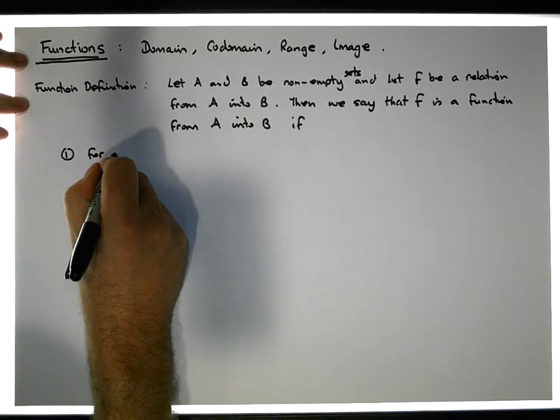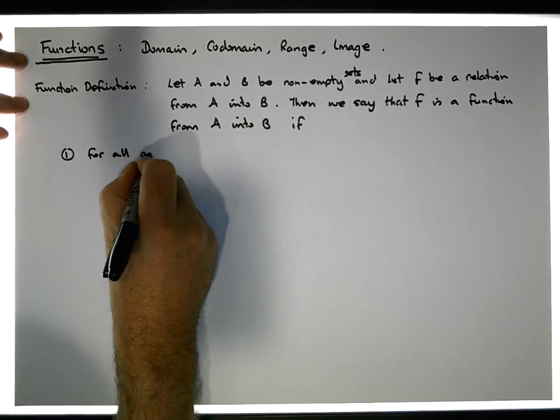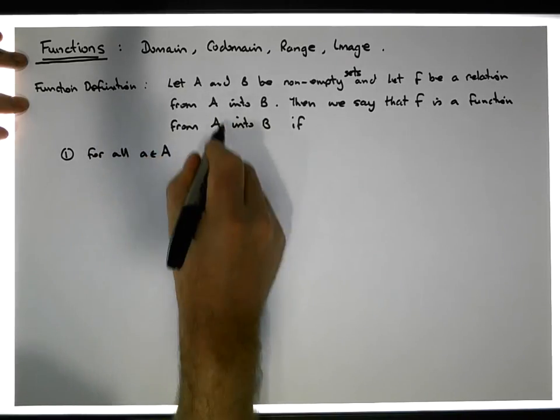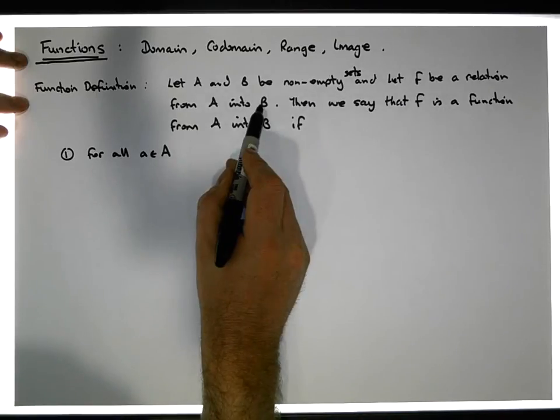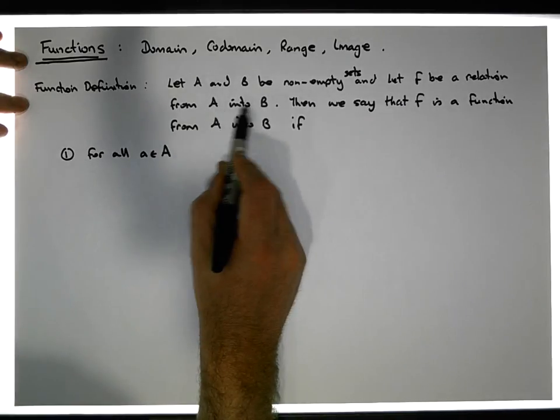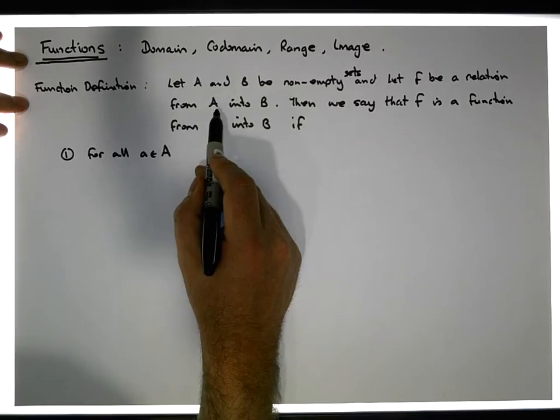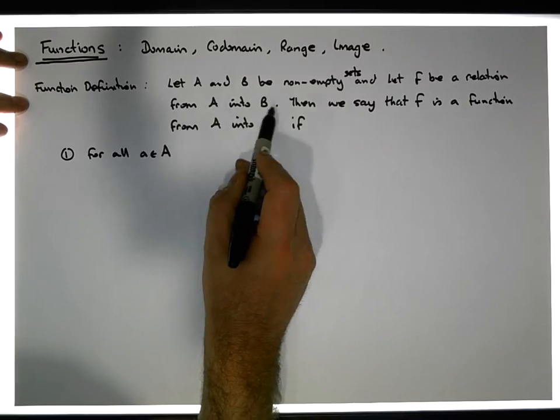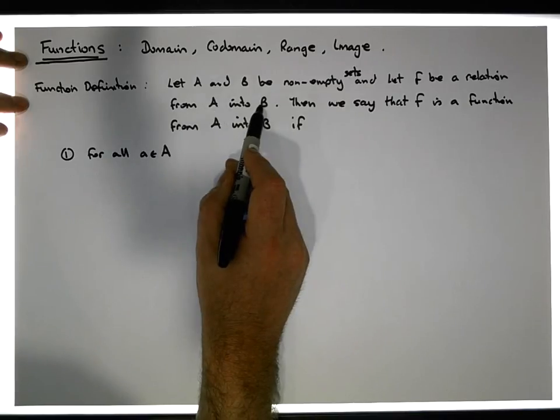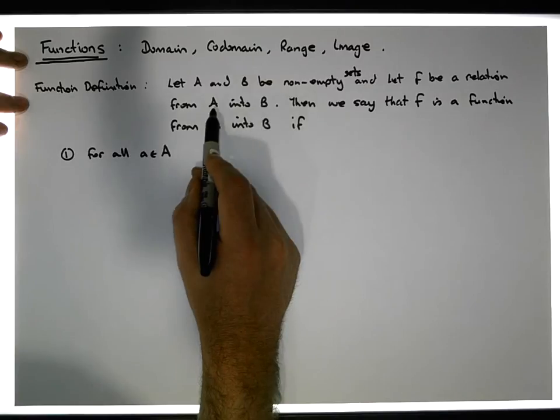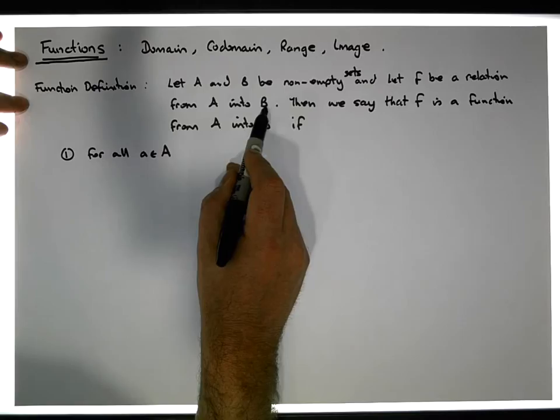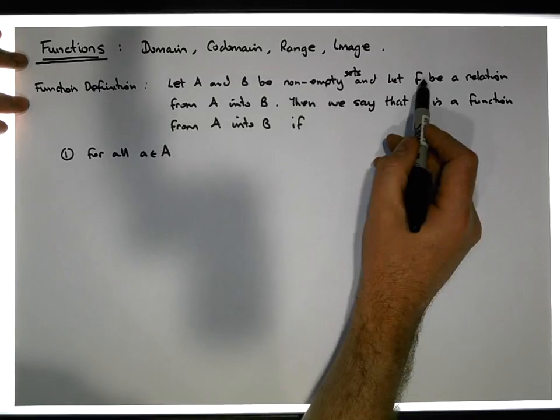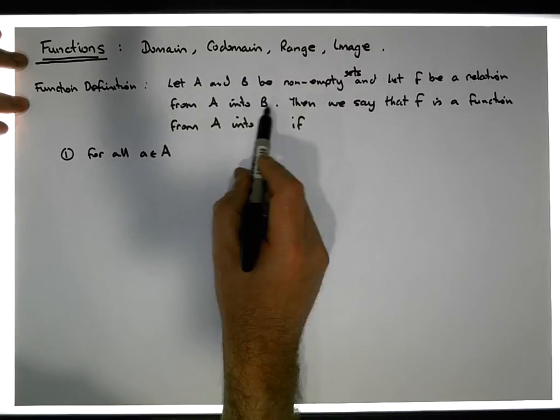For all elements of A, for every value in A—don't forget we're saying that f is a relation from A into B, so it's a subset of the cross product. It's a set of ordered pairs. The ordered pairs have a first component and a second component; the first components come from A, the second components come from B.